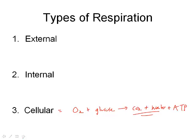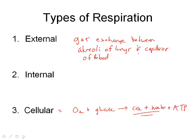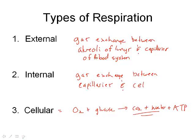With external respiration, air comes into the lungs and gas exchange occurs between the alveoli of the lungs and the capillaries of the blood system. So it's getting air from the lungs into the blood, which then travels to our cells. That is where internal respiration takes place — gas exchange between the capillaries of the blood and the cells. We need to get oxygen into our cells and get carbon dioxide and water out.